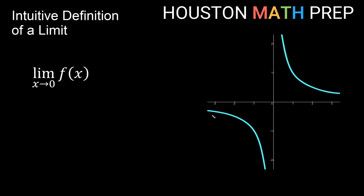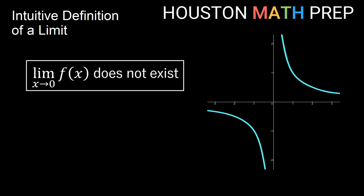For our last example, we have a similar situation with different behaviors on each side. From the left side of 0, as I approach, I will be going further and further negative without bound — tending toward an infinitely negative value. From the right, as I approach x equals 0, I keep increasing without bound, getting larger and larger positive values. Since this side decreases without bound and this side increases without bound, we're certainly not going to the same y value from both directions, so this limit does not exist as well.